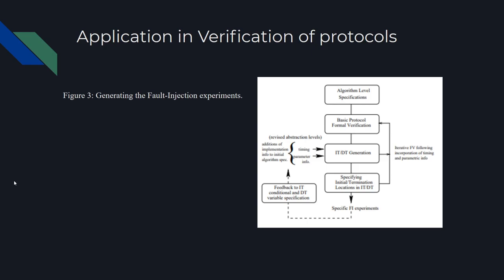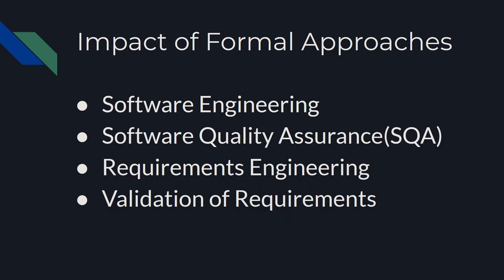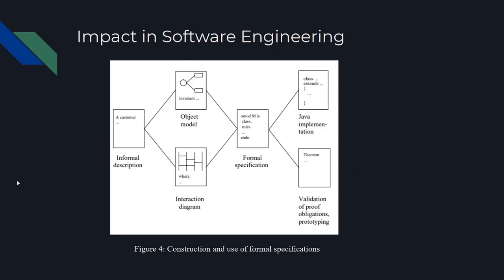Now that we have gone over the meaning of formal approaches and how they could be used, I will now go into how they can impact software engineering, software quality assurance, requirements engineering, and validation of requirements. Firstly, Versing and NAP in their 1996 study regarding formal approaches to object-oriented software engineering have attempted to show how formal approaches can be integrated into pragmatic software development methods.